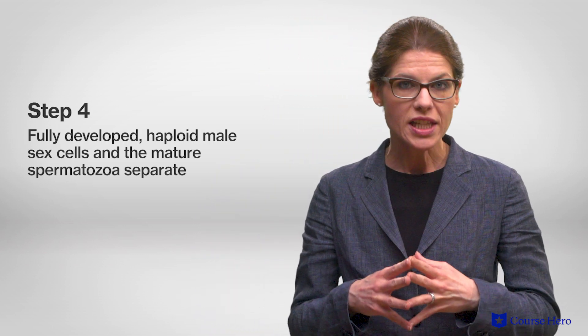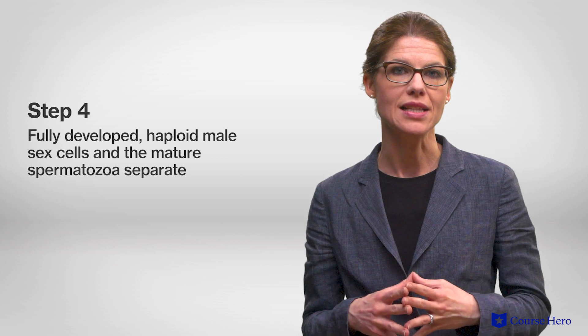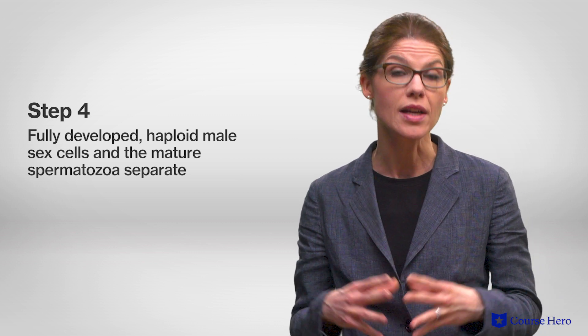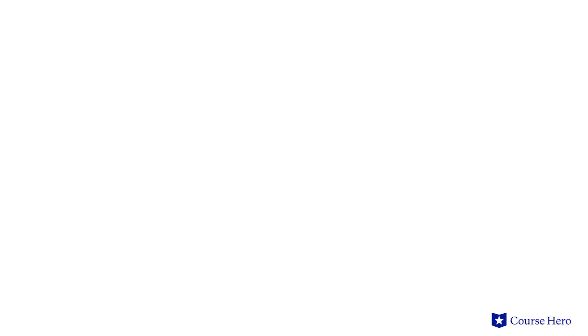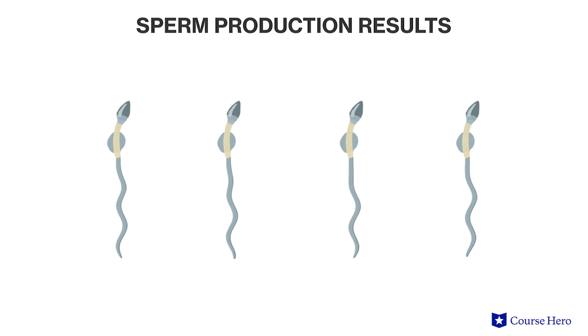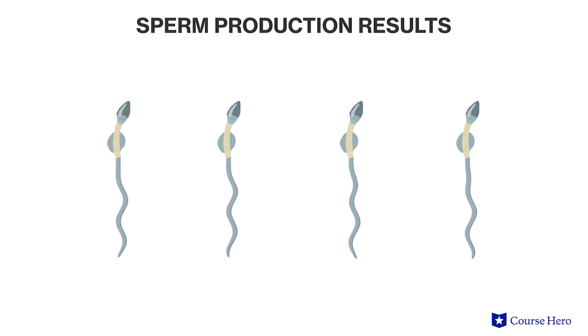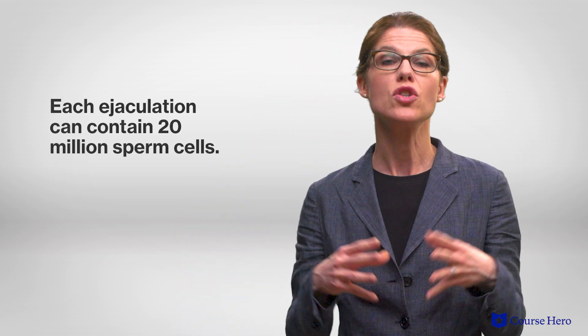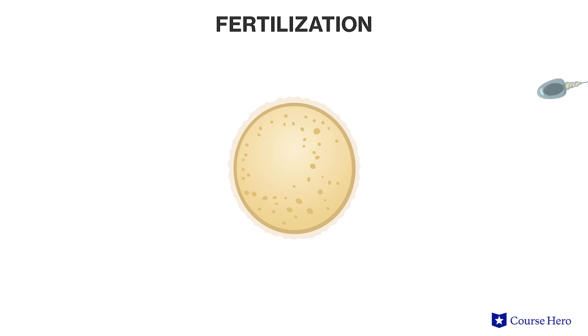Step four: when fully developed, haploid male sex cells and mature spermatozoa separate. Sperm production results in four individual sperm cells being produced from each precursor germ cell. It begins when the organism reaches reproductive age and continues throughout the male's lifespan. Each ejaculation can contain 20 million sperm cells. By producing far more sperm than are needed, the male is increasing his chances of fertilizing the female egg cell.